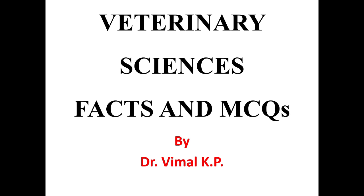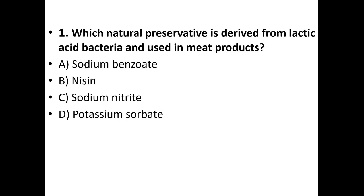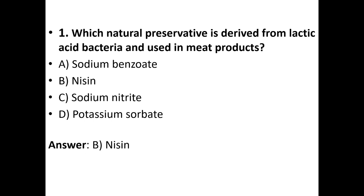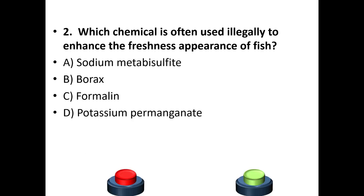First question: Which natural preservative is derived from lactic acid bacteria and used in meat products? Options: sodium benzoate, nisin, sodium nitrate, potassium sorbate. The answer is option B — nisin.